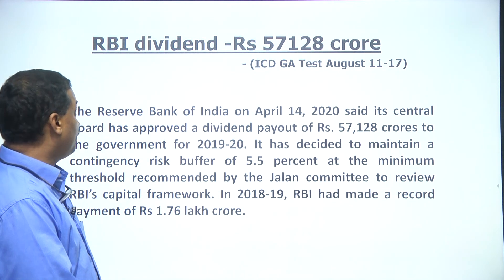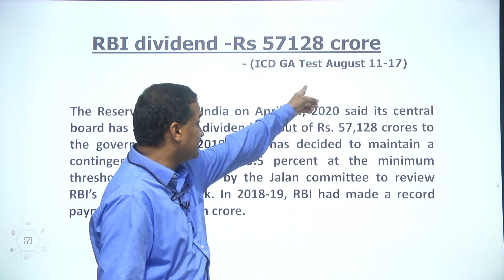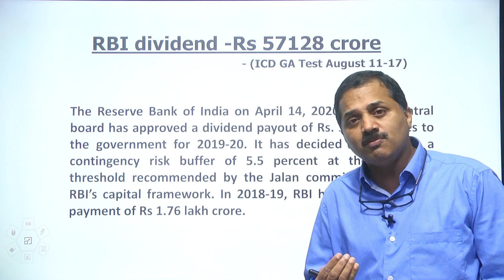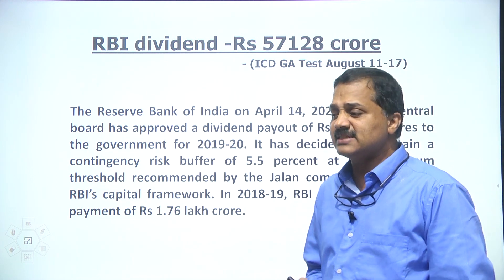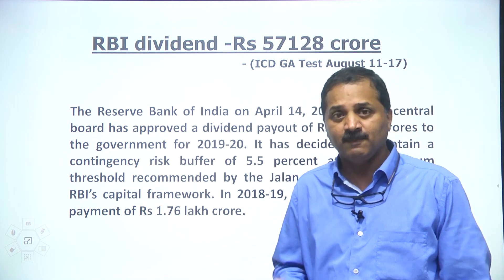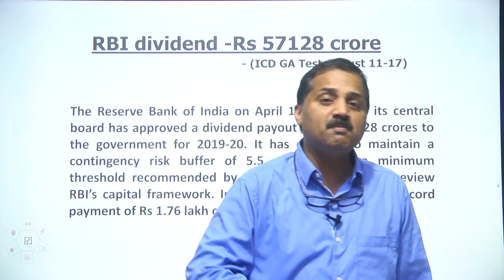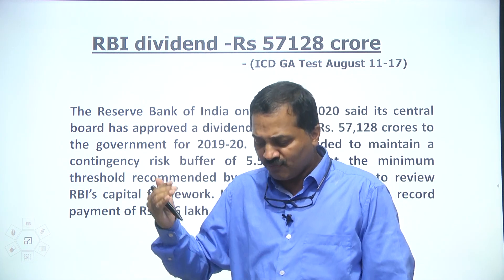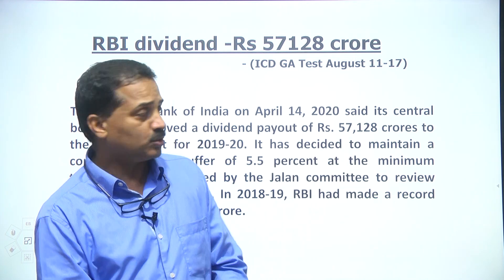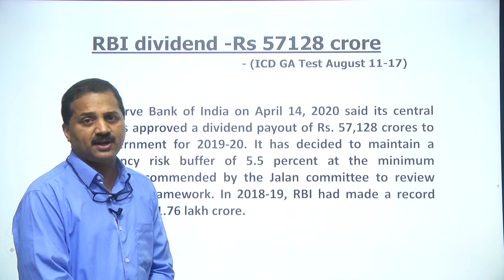RBI has paid out a dividend of ₹57,128 crore to the Government of India. This was in ICDG test August 11–17. Reserve Bank of India is owned by the Government of India, and RBI is a profit-making agency. A part of the profit must be shared with the Government as the owner. This was the dividend payout — dividend means divided profit. From the profit that RBI makes, RBI will give a part of it to the Government.